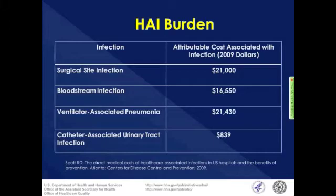If we break that down by infection type: every surgical site infection increases the cost of that hospitalization by around $21,000; bloodstream infections cost $16,000; ventilator-associated pneumonia costs $21,000; and a catheter-associated urinary tract infection costs approximately $1,000.